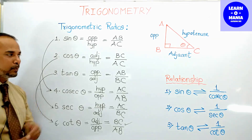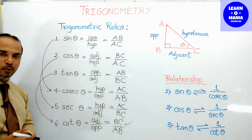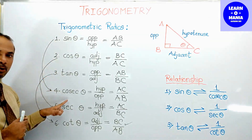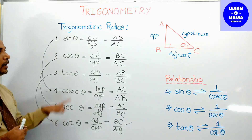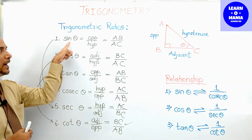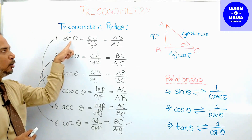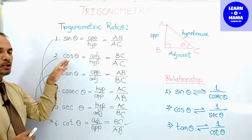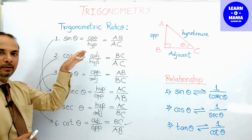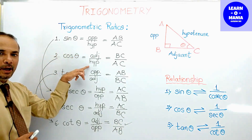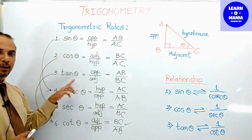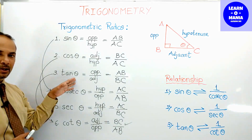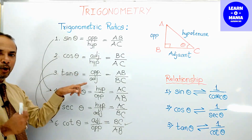So this is the root, the base of this chapter — these trigonometric ratios. Sin of any angle is always opposite upon hypotenuse. Cos of any angle is always adjacent upon hypotenuse. Tan of any angle in a right angle triangle is opposite upon adjacent.